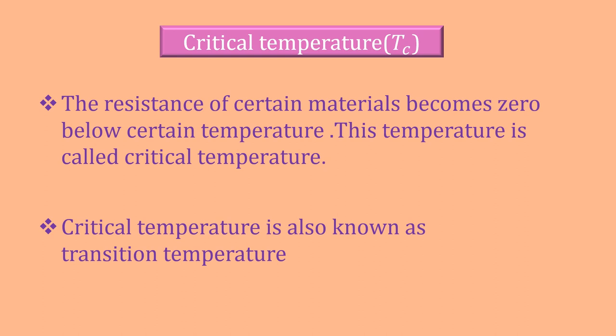What is critical temperature? The resistance of certain materials becomes 0 below certain temperature. This temperature is called critical temperature. We know that all materials possess some resistance when current is passing through it. If the temperature of a material is lower below certain limits, then the resistance of the material becomes 0 and the material becomes superconductor.